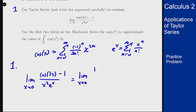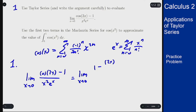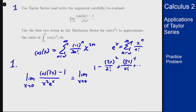For n=1, I get a negative term: -(2x)² / 2! plus (2x)⁴ / 4! plus terms that have higher powers of x in them.